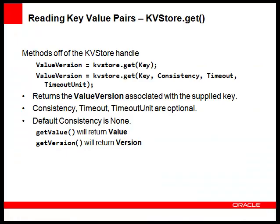Now that we have a kvStore handle, let's take a look at the get method used to retrieve key-value pairs. You pass in a key to the get method. Let's assume we have a simple single-part key specified as 101. The value could be a timestamp, part of a weblog or a credit card number, or a compound key. To obtain the value — think reading a record — you simply pass in the string 101 and you are returned a value version object.